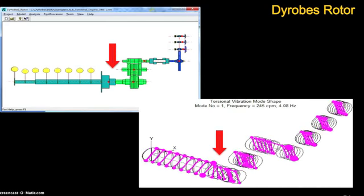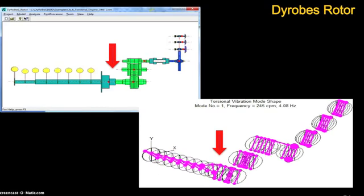Again, you can animate your torsional models which will give you valuable physical insight into potential problems. Here, in the first mode or critical speed, you can see a large opposing movement in the coupling which indicates high torsional stress.